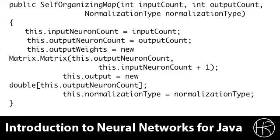We then create a weight matrix, which is essentially the output count by the input neurons plus one. We add one to the input neurons because we may have a synthetic input value. If we don't have a synthetic input value, it's going to simply be zero and it won't matter anyway.